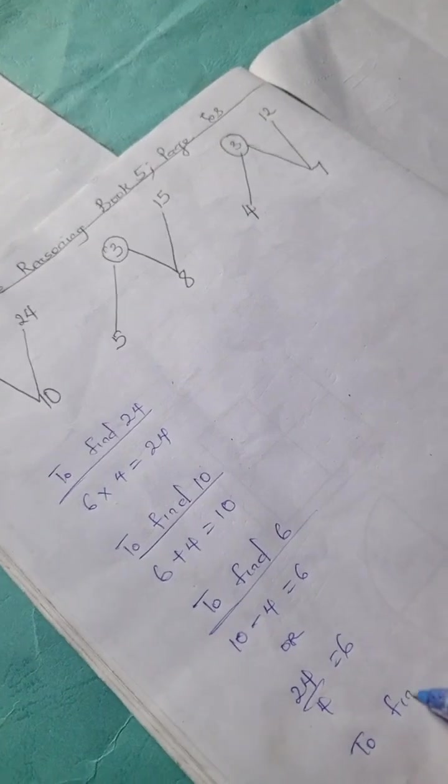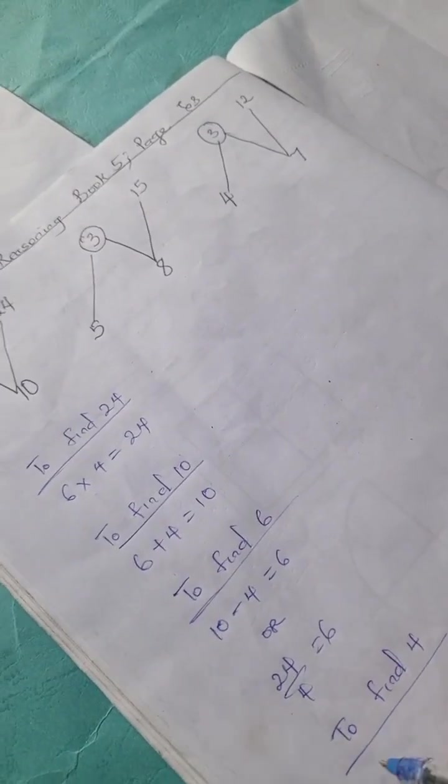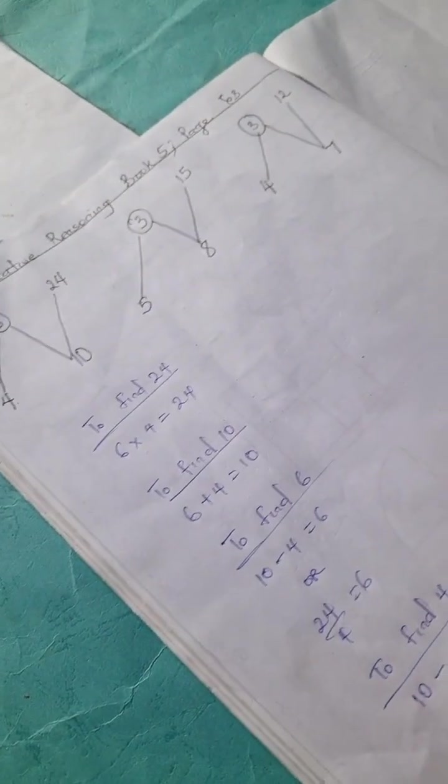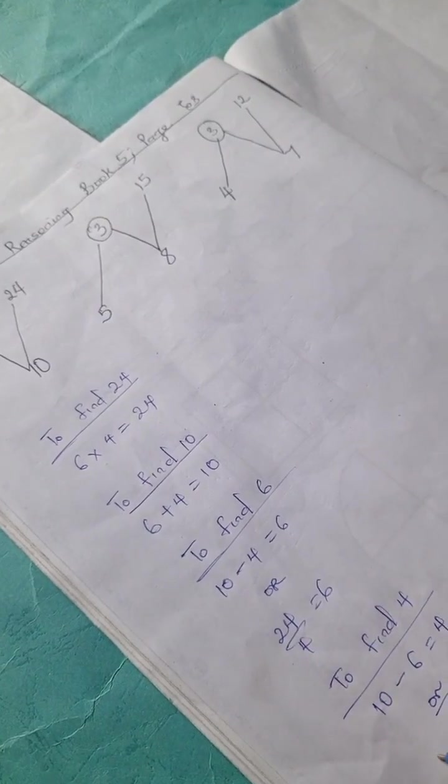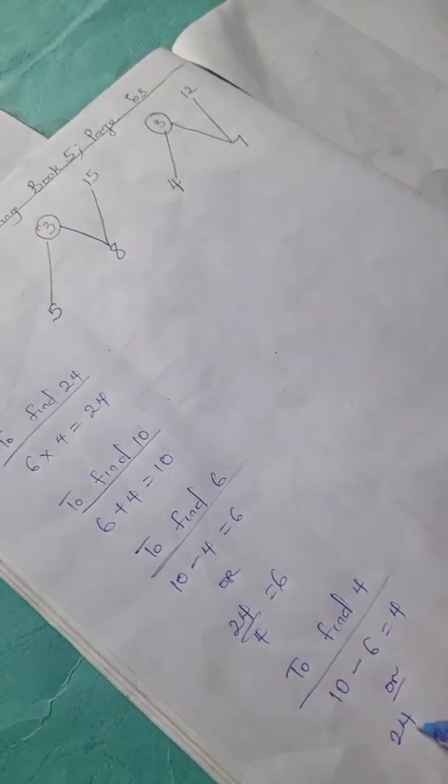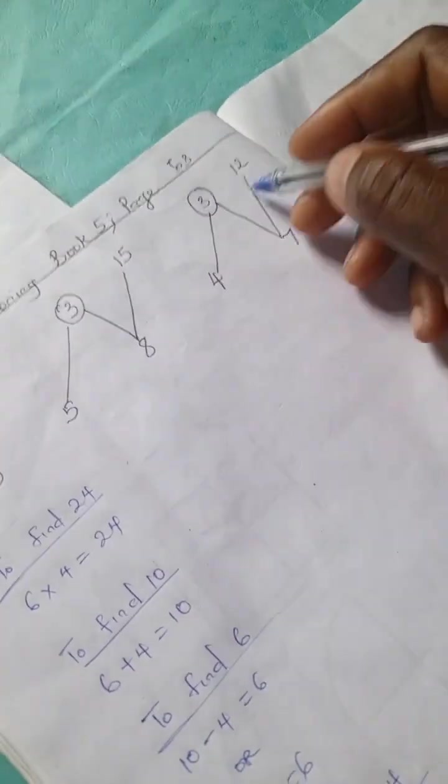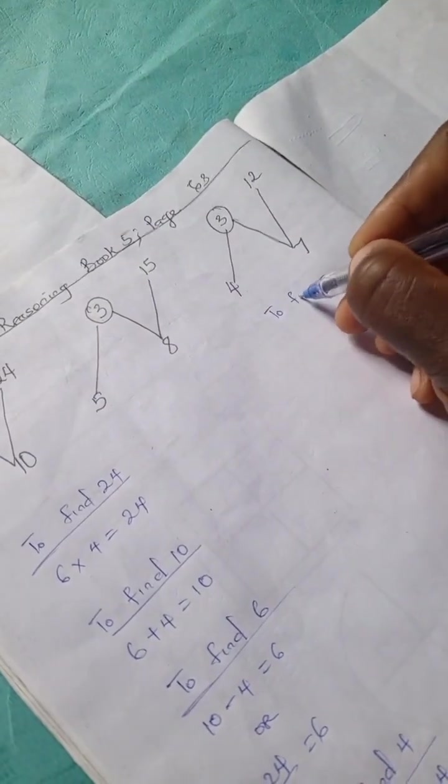Okay, and to find 4, we have 10 minus 6 is 4 or 24 divided by 6 is 4. Okay, so let's work with this example and see if we would get the same answer.